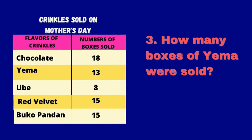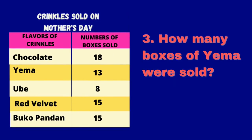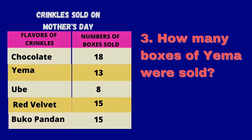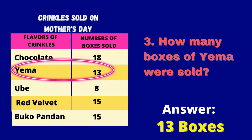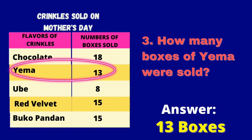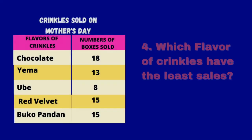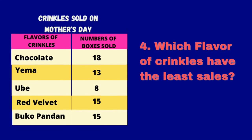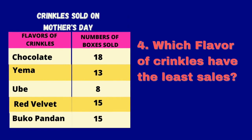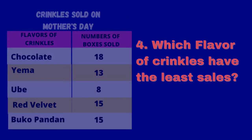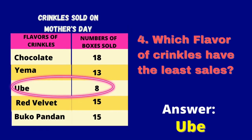Number 3: How many boxes of Yema were sold? The answer is 13 boxes of Yema were sold. Number 4: Which flavor of crinkles has the least sales? The answer is Ube — it has only 8 boxes sold.